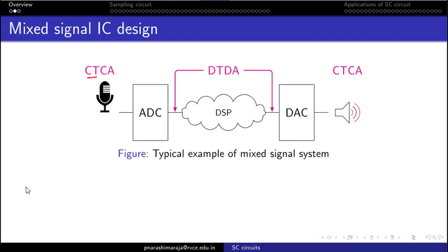The mic basically picks an analog signal which is continuous in time and continuous in amplitude. That is converted into a digital signal by passing through an analog-to-digital converter. The output of this ADC is discrete in time and discrete in amplitude. Once converted, it is processed through a digital signal processor and then passes through a digital-to-analog converter to reproduce an analog signal. This is the basic block diagram, and we have to figure out where the switch capacitor is utilized.